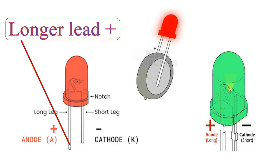For visual identification, the longer lead is the positive or anode, while the shorter lead is the negative or cathode. This is the most common method for basic LEDs.